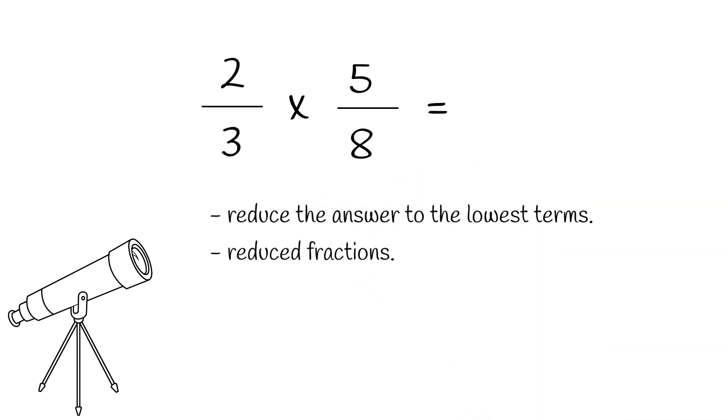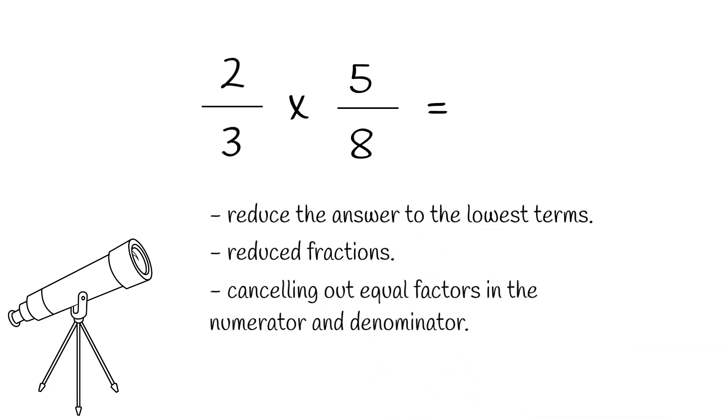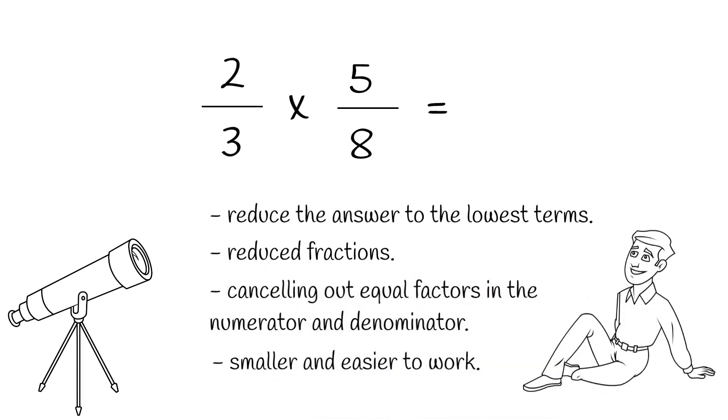When multiplying fractions, you can often make the job easier by canceling out equal factors in the numerator and denominator. That makes the numbers you're multiplying smaller and easier to work with, and it saves you the trouble of reducing at the end.